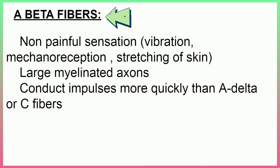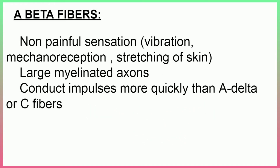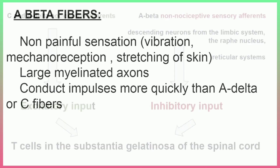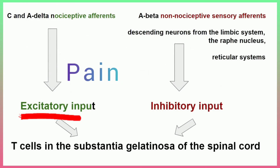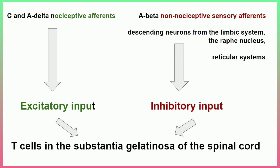In the transmission cells, there are also non-nociceptive fibers. These are large diameter fibers, whereas C fibers and A-delta fibers are small diameter. The large diameter fibers are myelinated, and they play a role in modulating pain perception.